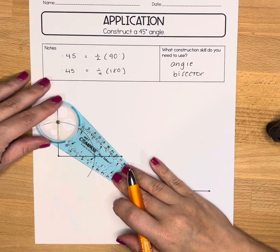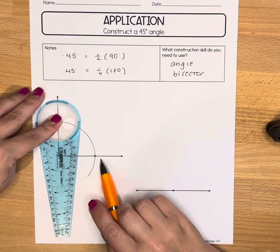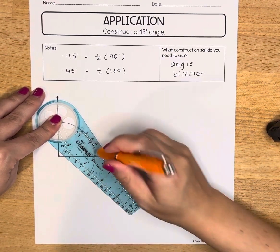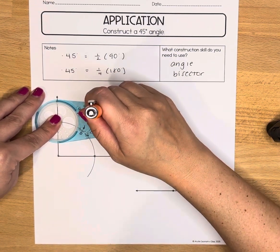Starting with either intersection, I'm going to find a measurement on my compass that is pretty close to this other intersection. Basically we want more than halfway across the angle.